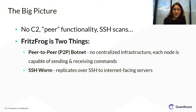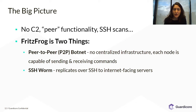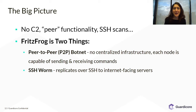All this led me to understand that FritzFrog was two things. First, it was a peer-to-peer botnet — every node was its own C2, able to receive and send commands to other nodes, with no single point of infrastructure. And the second thing FritzFrog was is an SSH worm, trying to replicate the malware to other SSH servers, thus expanding the whole peer-to-peer network to other machines on the internet.